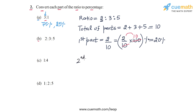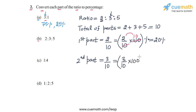Similarly, the second part as a percentage: that part is 3, divided by the total of parts, so 3 by 10. To convert to percentage, we write 3 by 10 into 100. 100 by 10 is 10, and 3 into 10 is 30. So the second part is 30% of the whole.